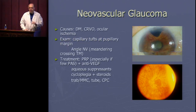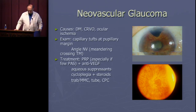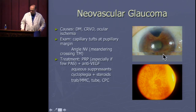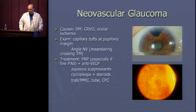Neovascular glaucoma is something you're going to see throughout your careers — unfortunately, it's not that rare. We have a lot of diabetics, patients with central retinal vein occlusion, and sometimes ocular ischemia with carotid stenosis. In the beginning, neovascular glaucoma is very subtle. You see rampaging, huge dilated rubeotic vessels on the iris surface in advanced cases, but initially they're tiny tufts at the pupillary border that you have to examine at high power.